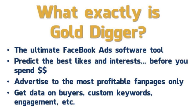What Gold Digger does is let you predict which likes and interests are going to convert best for you before you put your ad live and spend a dime. You enter a list of all the possible fan pages and likes you're thinking of targeting, and it pulls data from all the posts and comments on those fan pages. For example, it looks for buyer keywords — if people comment using words such as buy, subscribed, or purchased, it logs those and gives you a data reading: a percentage of people using those keywords who are potentially buyers within that fan page.